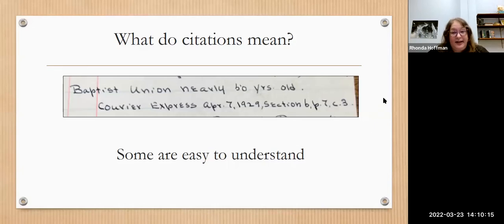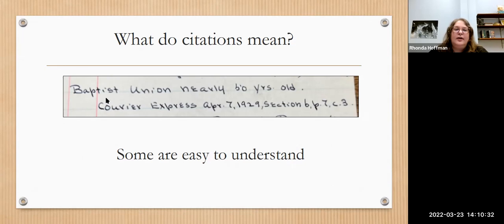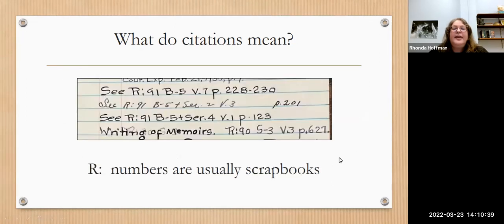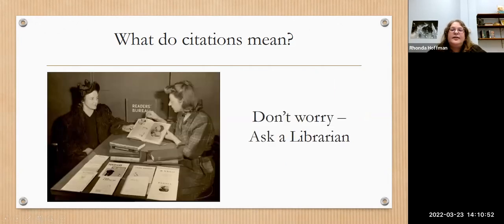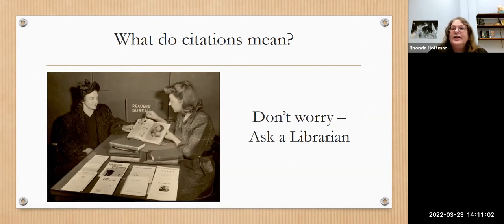You're probably wondering what the citations mean. Some are very easy to understand — for example, 'Baptist Union, nearly 50 years old' lists the Courier Express with the date, section, page number, and column number. But you might also see things like an R number with a colon, which usually means a scrapbook. Don't worry — we like you to ask us questions. Just ask a librarian; we don't expect you to know what those things mean.